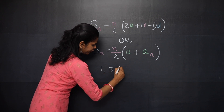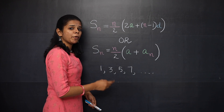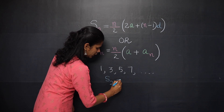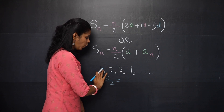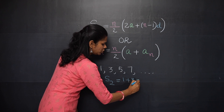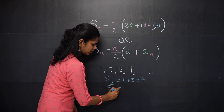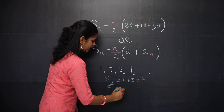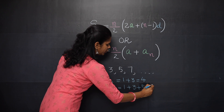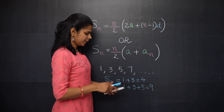Consider the AP: 1, 3, 5, 7, etc. The sum of the first two terms, S2, equals 1 + 3 = 4. The sum of the first three terms is 1 + 3 + 5 = 9. Now let's find the sum of the first 30 terms.